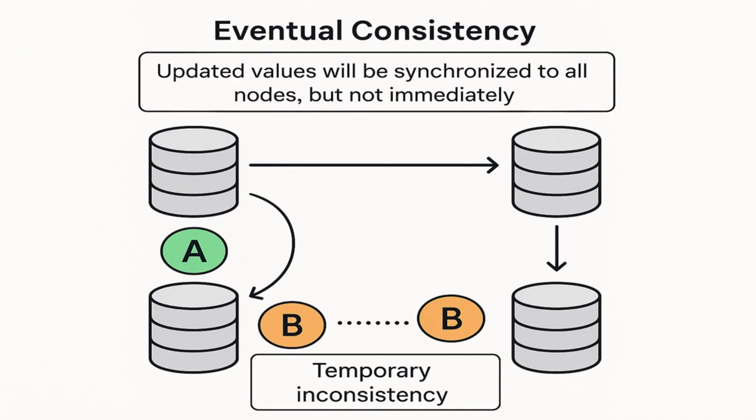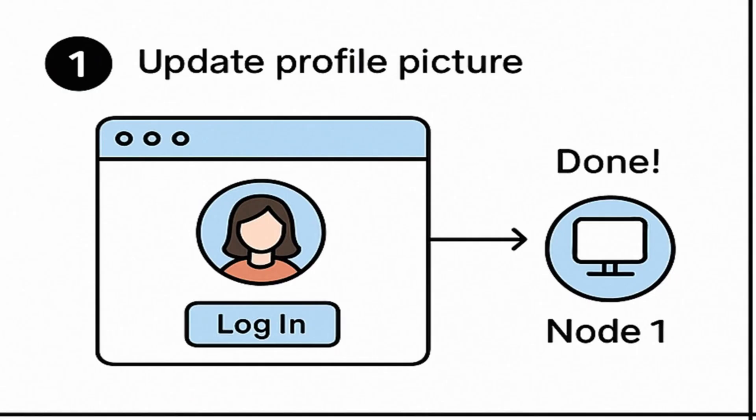Let's understand this with a simple example. Imagine you are updating your profile picture on a social media application. You log into the platform and update your profile picture. That update is sent to node 1 because that is the closest node to you. So the updated profile picture is stored on node 1 only. Node 1 updates your profile picture and instantly replies that it's done. Behind the scenes, node 1 starts sharing the new picture with node 2 and node 3, which are also nodes in the distributed system.